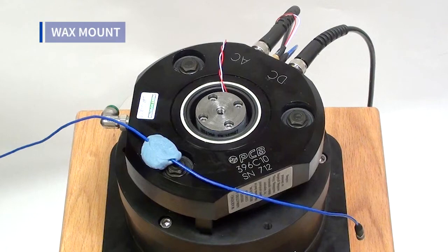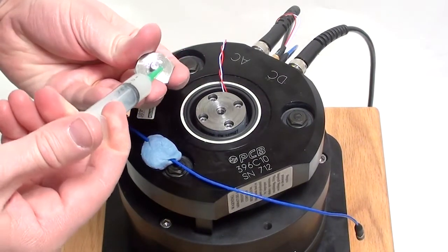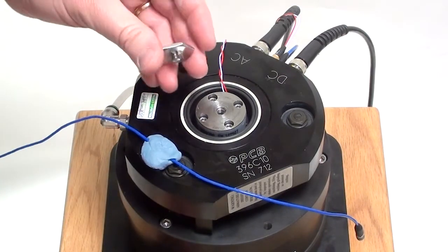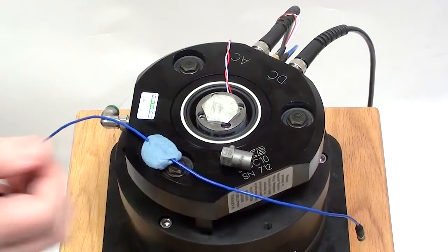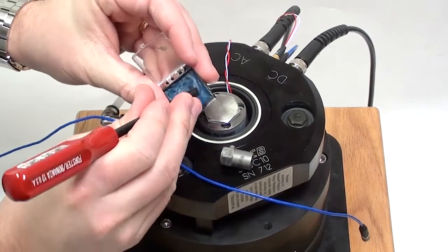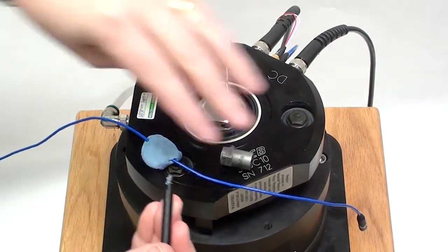For the wax mounting, an adhesive mounting base is stud mounted to the shaker with the techniques noted previously. A layer of petrowax is applied to the base of the accelerometer and it is pressed onto the mounting base.